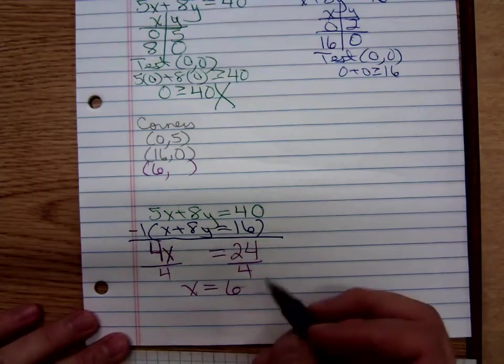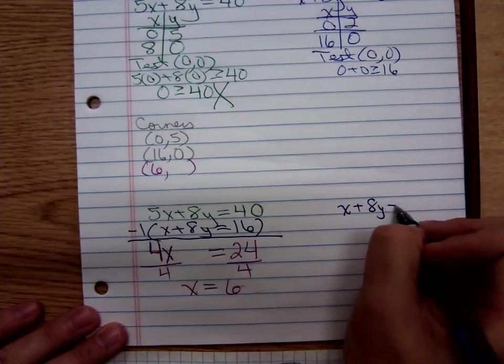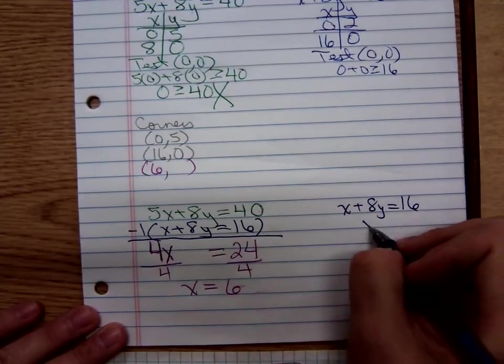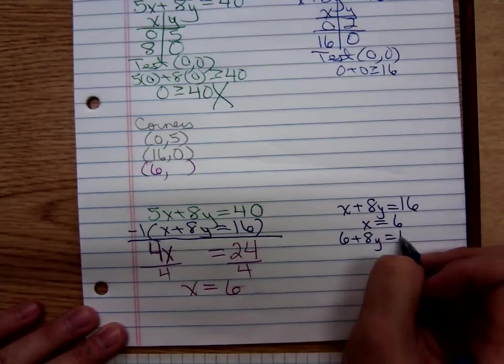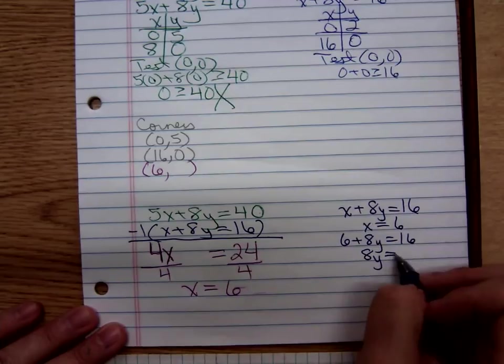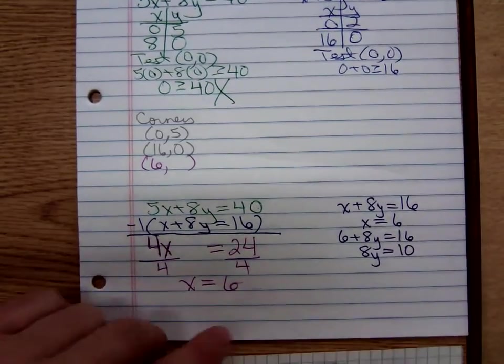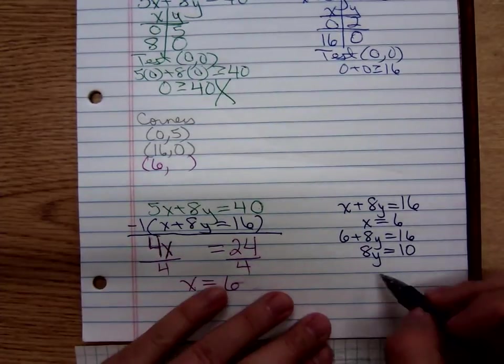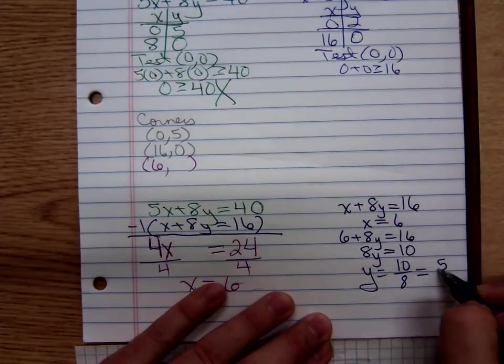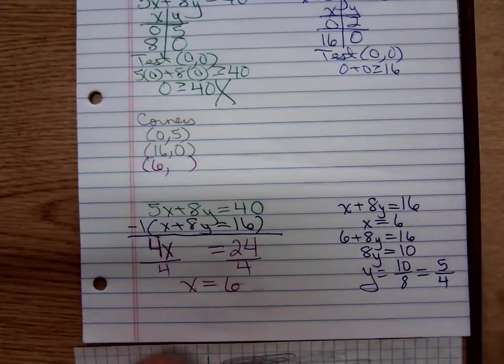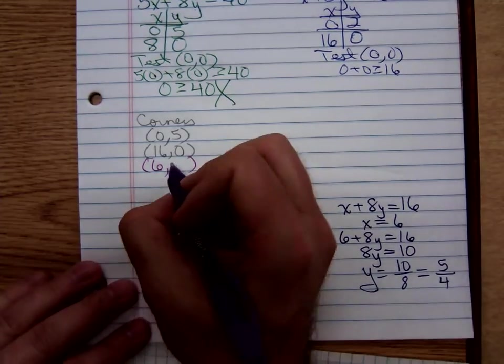I think I'll use x plus 8y equals 16. I'm going to plug in x equals 6. 6 plus 8y equals 16. So, we have 8y equals 16 minus 6 is 10. Divide both sides by 8 to give y equals 10 eighths. Well, that reduces to 5 fourths. So, there's my third corner point.